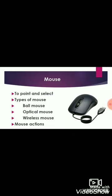There are different types of mice available in the market: ball mouse, optical mouse, and wireless mouse. A ball mouse has a rubber or metal ball under it — if the ball moves, the mouse pointer also moves. The small arrow on the computer screen is called mouse pointer. An optical mouse has red light under it.